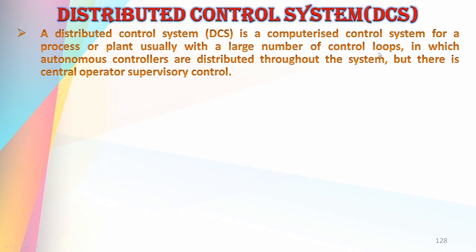There will be a large number of controllers, and it has different autonomous controllers distributed throughout the system. That is the reason why it is called a distributed control system — autonomous controllers are used.